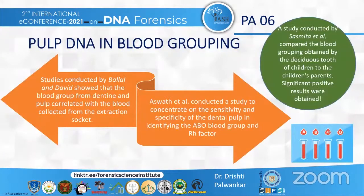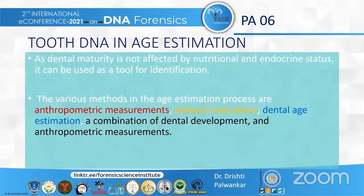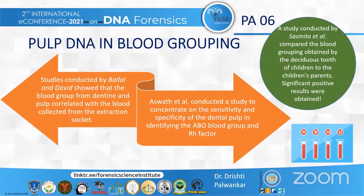Pulp and blood grouping: Various studies demonstrated that dental pulp can help identify blood group. Studies by Balal and David showed that blood group from dentine and pulp correlated with blood collected from the extraction socket. They collected blood from the dental pulp by sectioning the tooth and immersing it in agglutinating and anti-serum solutions, correlating coagulation to determine blood group. Aswath et al. conducted a study on the sensitivity and specificity of dental pulp in identifying the ABO blood group and rhesus factor. Sasmith et al. compared blood groups obtained from deciduous teeth of children to those of their parents, with significantly positive results.